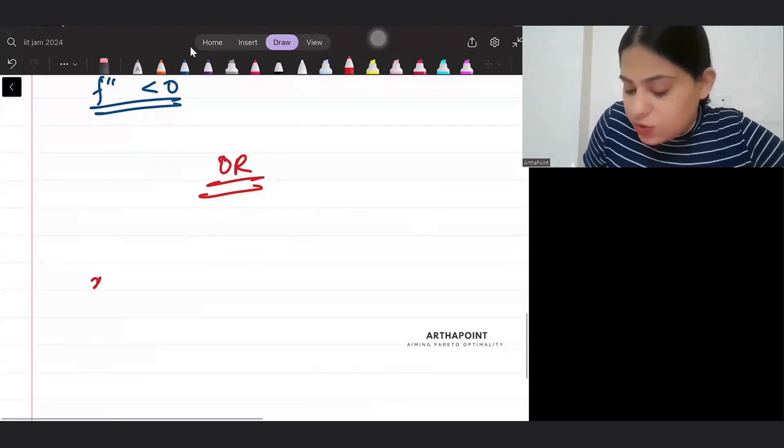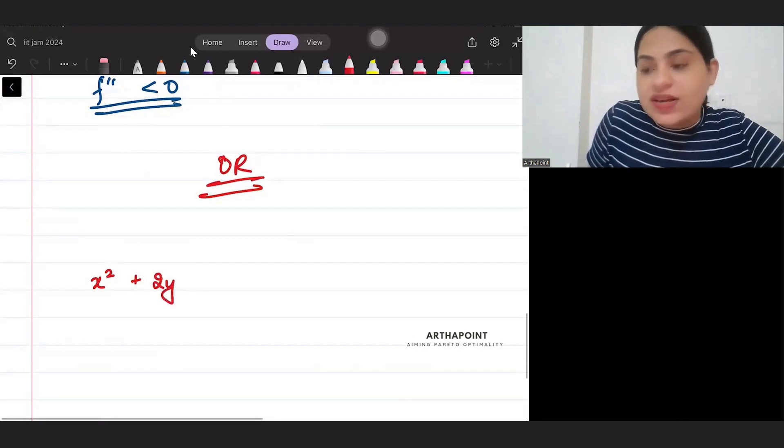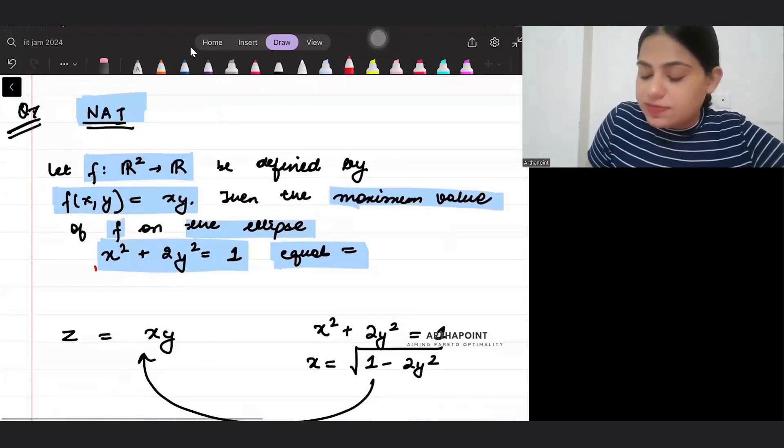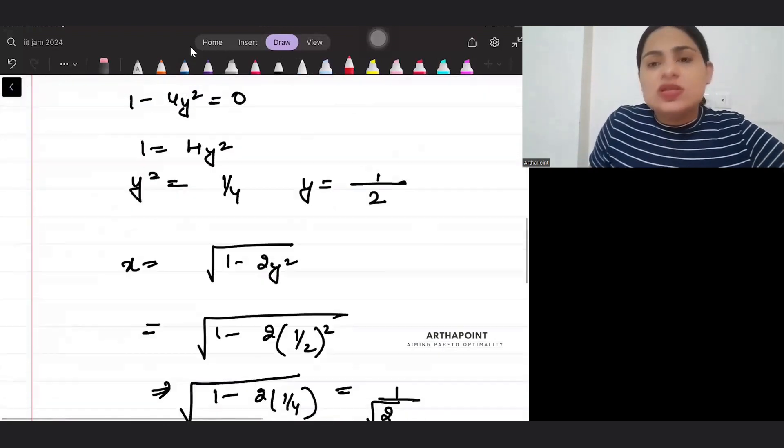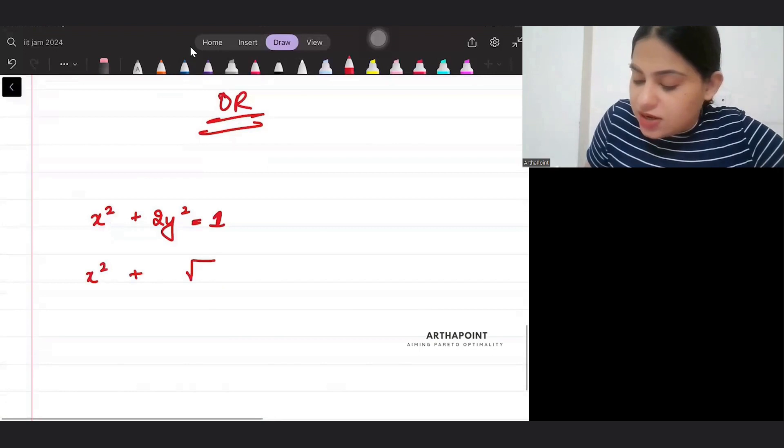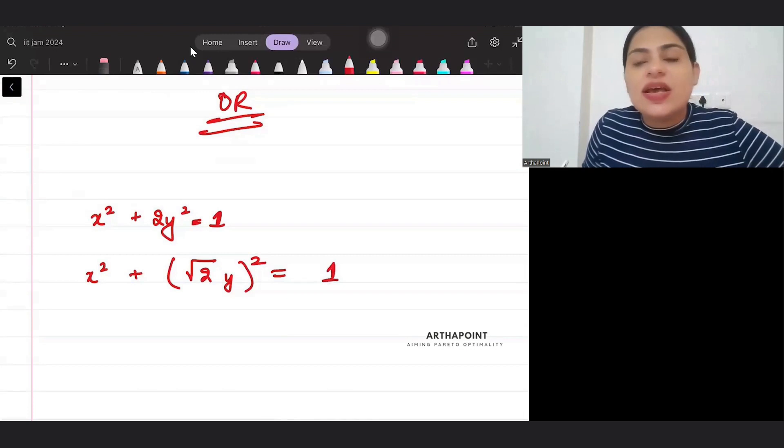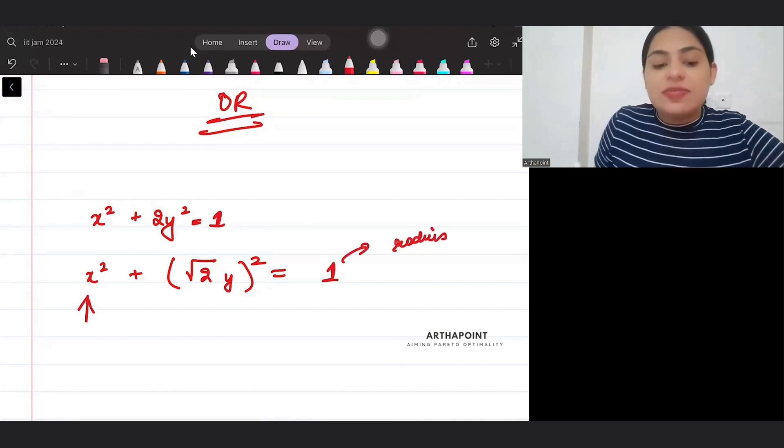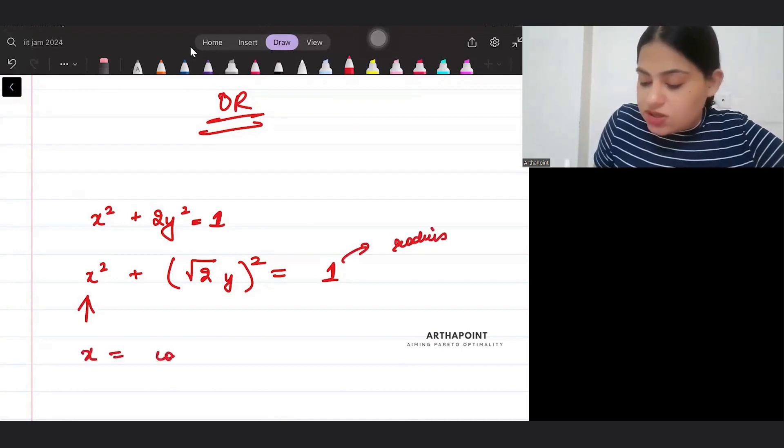There is another method to do such questions. So if you see, you are given x square plus 2 y square is equal to 1. This is your constraint that you are given. What you can do is you can write it like this: so this will be x square plus root 2 into y whole square is equal to 1. But this is like an equation of the circle of radius 1.